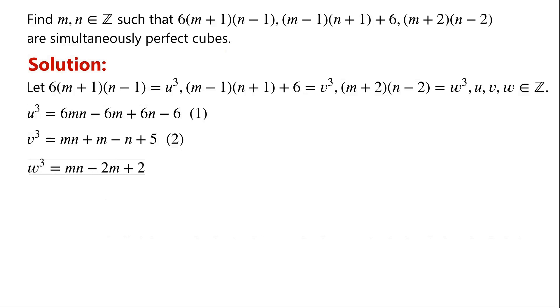w cubed equals mn minus 2m plus 2n minus 4. We label this as equation 3.